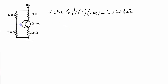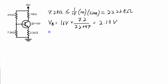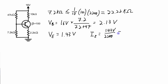With no base current, the voltage at the base is simply the voltage divider between those two resistors, which works out to 2.13 volts. If I know the voltage at the base, the voltage at the emitter is 0.7 volts less than that, so my emitter voltage is 1.43 volts. From there I can calculate the emitter current: 1.43 volts divided by the 2200 ohm emitter resistor, which works out to 0.647 milliamps.